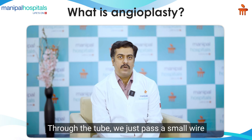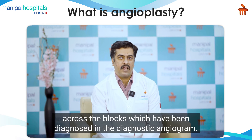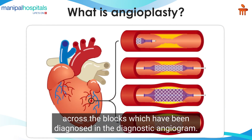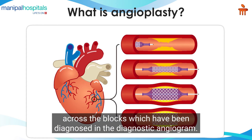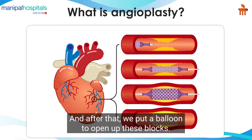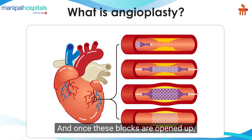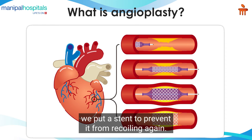Through the tube we pass a small wire across the block that was diagnosed during the diagnostic angiogram, and after that we put a balloon to open up the block. Once the block is opened up, we put a stent to prevent it from recoiling again.